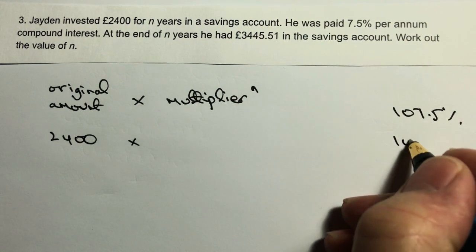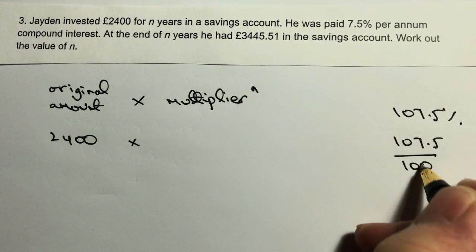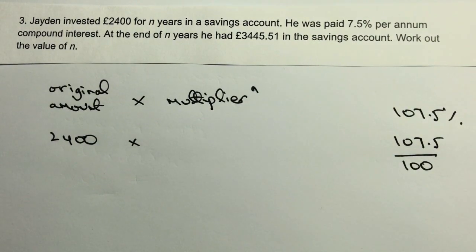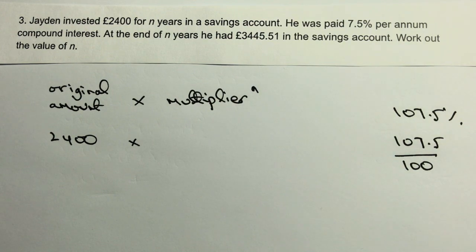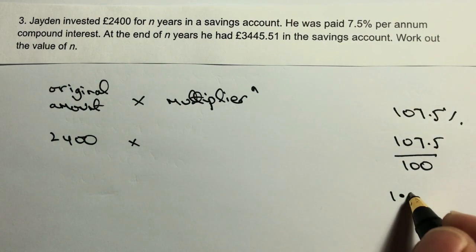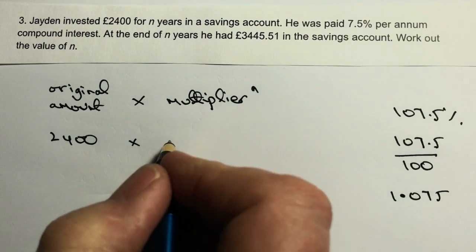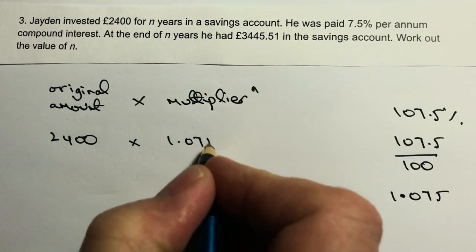We can rewrite 107.5% as 107.5 divided by 100, because percent means out of 100. Dividing by 100 moves the decimal point two places, giving us 1.075. So 1.075 is the multiplier we're going to use.